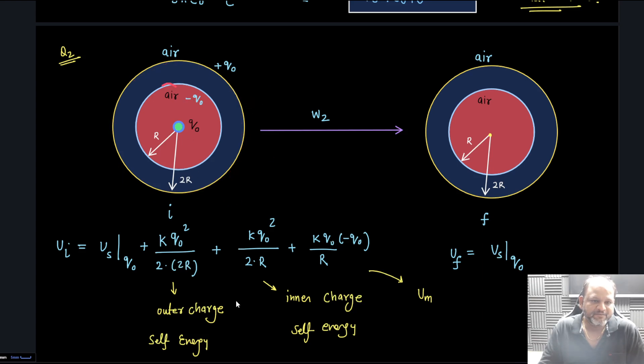There is some energy here and some energy here and in this part there is no energy because field is zero inside this conductor. It will be self energy of this q naught, self energy of this minus q naught, and then for inside part we are writing energy. I hope this is clear to you, don't get confused here.